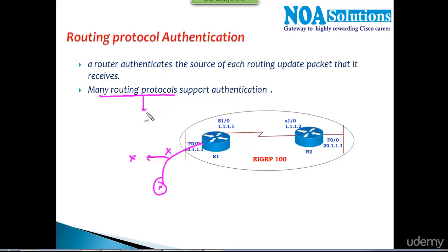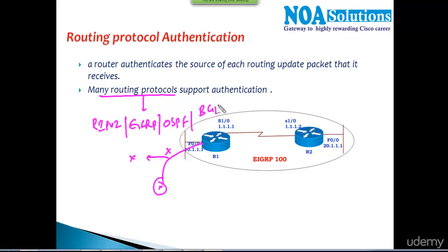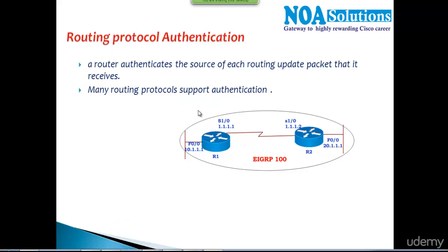Most modern routing protocols support authentication. RIP version 2 supports it, EIGRP supports it, and OSPF as well as BGP also support it. In the next couple of videos we'll discuss how to configure authentication on RIP version 2 — note that version 1 does not support it — and also how to configure authentication in OSPF and EIGRP.